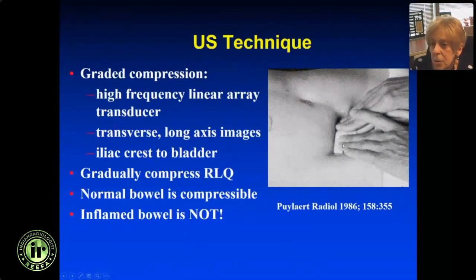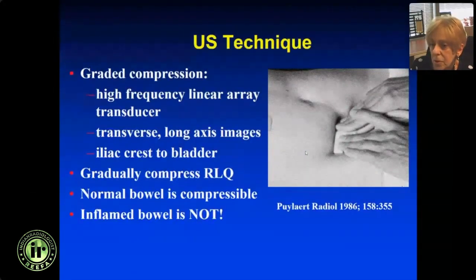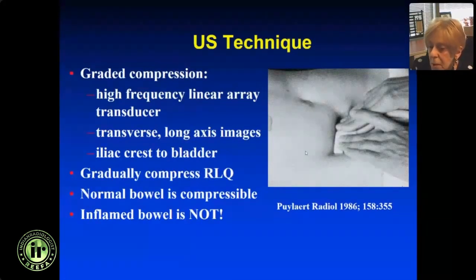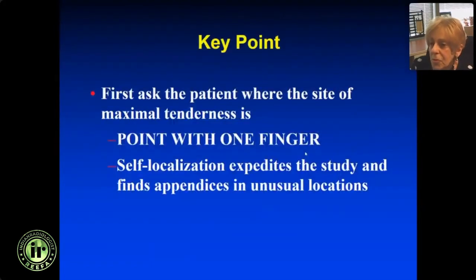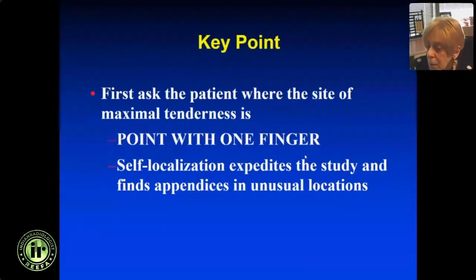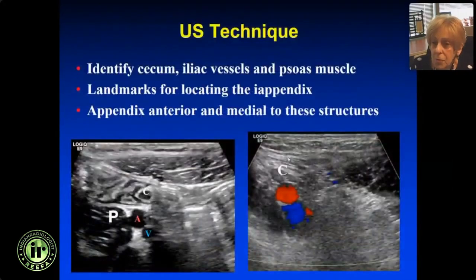You take a high-frequency linear array transducer. You start around the iliac crest, taking transverse and long axis images from the iliac crest to the bladder, and you gradually compress the abdomen. Normal bowel is compressible — it's going to move out of the field. Inflamed bowel will not. Before you start the exam, ask the patient where they hurt — point with one finger. It's going to make the study faster and help you find the appendix, which may be in an unusual location, maybe retrocecal or deep in the pelvis.